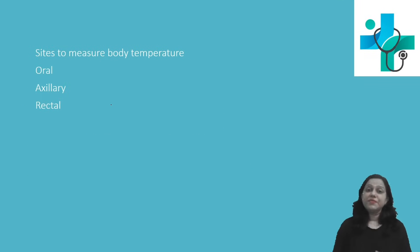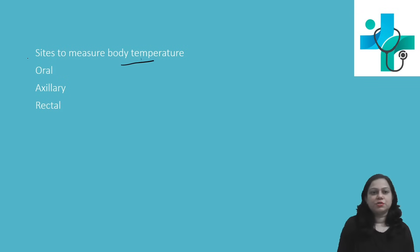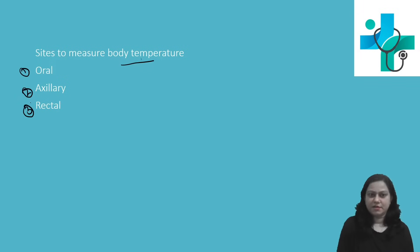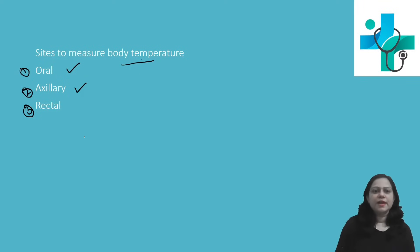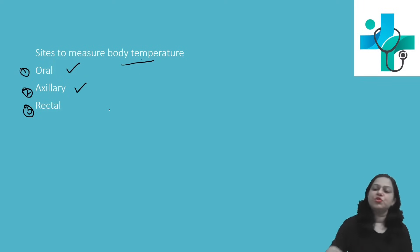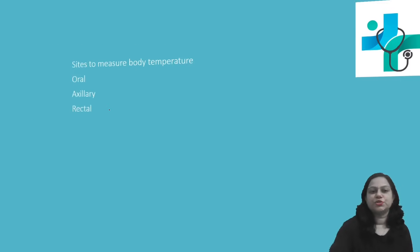Different sites where you can measure body temperature are oral, axillary, and rectal. Out of these, oral and axillary sites are the commonly used sites to measure body temperature.